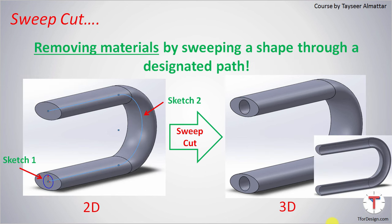Sweep Cut is the opposite of Sweep Boss. Here, we are removing materials by sweeping a shape through a designated path. Similar to Sweep Boss, we would need two different sketches to apply this feature. With Sweep Cut, we can go from the two sketches on the left to producing the object on the right.